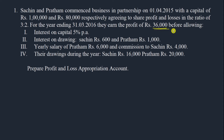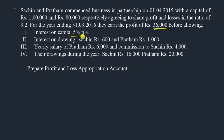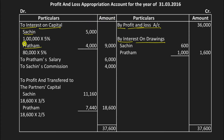Next, we handle interest on capital, which is paid to the partners and is therefore an expense for the firm — it goes on the debit side. For Sachin: 5% on 1 lakh capital = 5,000 rupees. For Pratham: 5% on 80,000 = 4,000 rupees. The total interest on capital is 9,000 rupees.